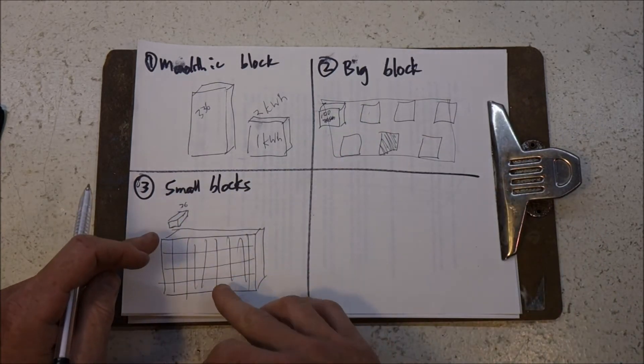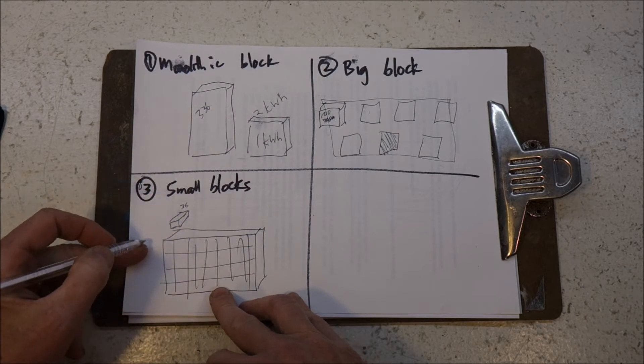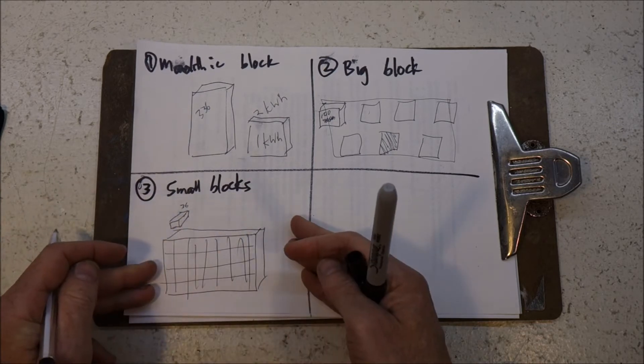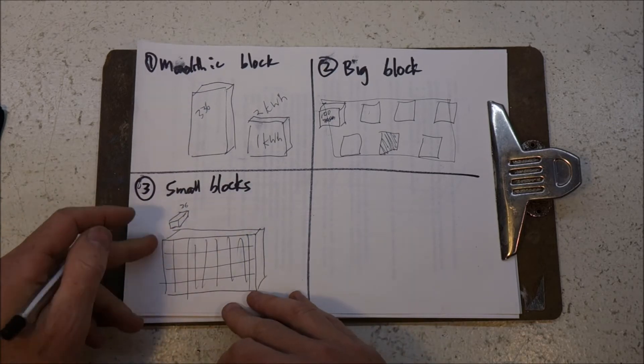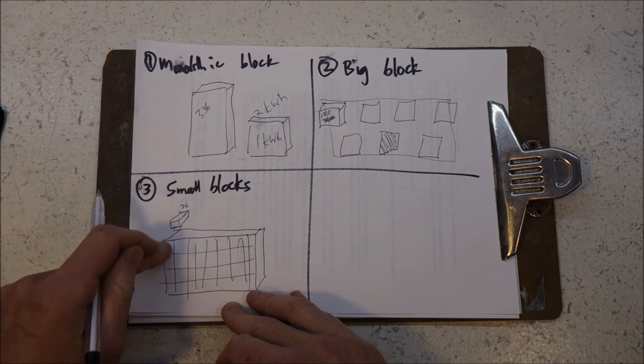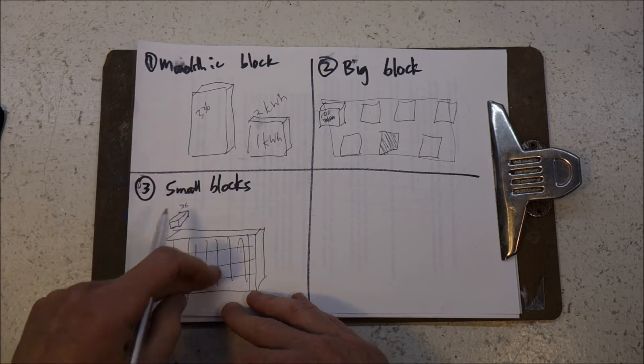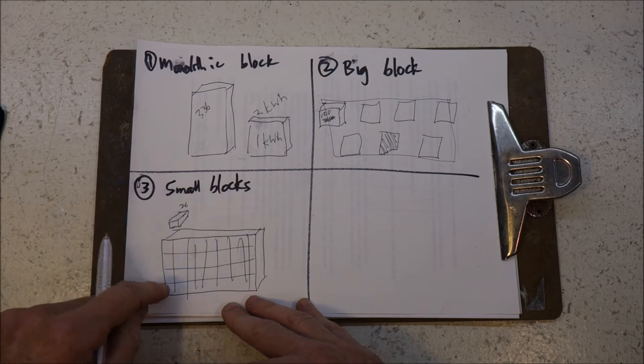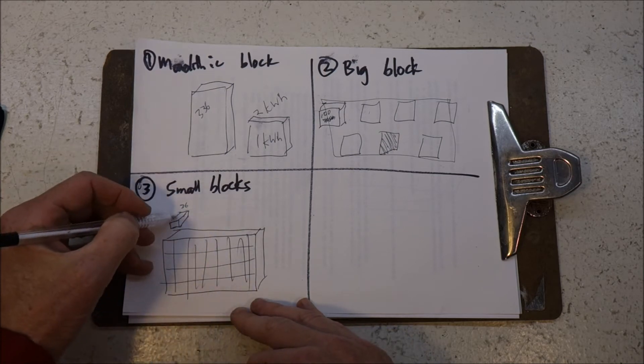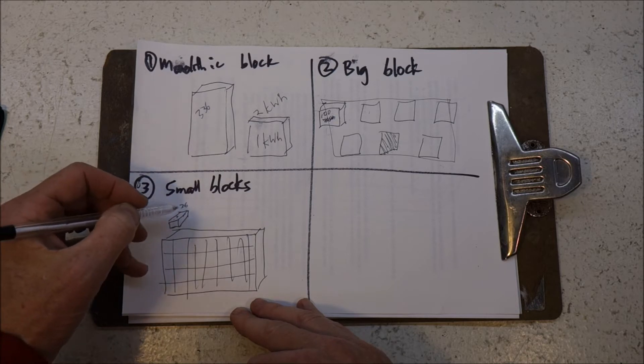If you have lots of small blocks, you can actually yank out a little block even while the system is running. And it's easy to build a small block to replace.